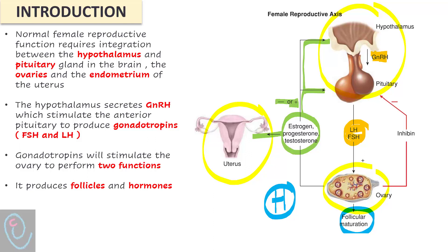Initially, it's a negative feedback effect. However, with a larger amount and longer duration of estradiol release, it switches to a positive feedback effect, inducing the LH surge. On the other side, the peptide inhibin has a negative feedback effect on the pituitary glands.